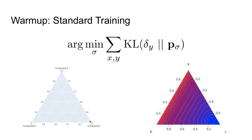Points at the top are distributions that favor A, points to the left favor B, and points to the right favor C. A one-hot vector is represented by a point at the bottom right, directly only over the C component. Given a supervised example delta y, you can see on the right-hand part of the slide what this loss favors in terms of a final P sigma. If we can get to the blue area, we'll get a better loss, whereas if we're in the red area where we make incorrect predictions, then we'll have a much worse loss.